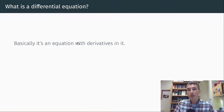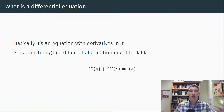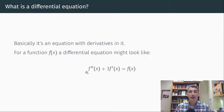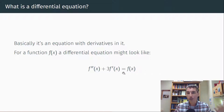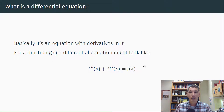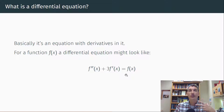The simple answer is a differential equation is an equation with derivatives in it. So it could look something like this: you've got some function f of x, and you can see you've got the second derivative of f plus three times the first derivative of f is equal to f. It's an equal sign, so it's an equation, and what you have in it is a function and its derivatives. Now this is a more difficult one, but that's the kind of thing we'll be seeing throughout this semester.